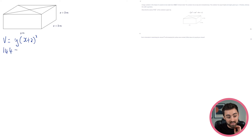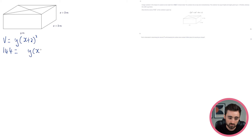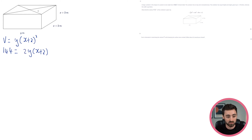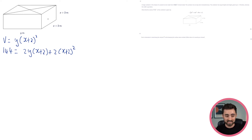So we know that 144 equals the surface area, however else we can work out the surface area. Looking at this thing, it's just going to be all of these sides added together. There's no side on the top because it's got an open top. This side here is going to be y times (x+2), but there's going to be two of them, so that's 2y(x+2) for those two sides. This side here is going to be (x+2) times (x+2), so (x+2) squared. But again there's one on the other side, so that's plus 2 lots of (x+2) squared. And the bottom is going to be y times (x+2).